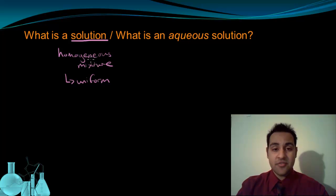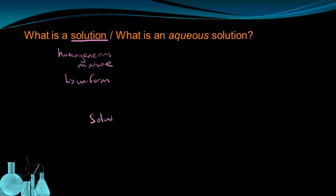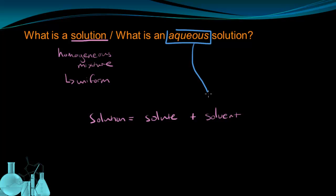So a solution could be a mixture of solids, liquids, gases. It doesn't matter as long as it's a uniform mixture. That's a solution. In the simplest case, a solution is simply made up of a solute and a solvent. The solute is what's being dissolved and the solvent is what's doing the dissolving. An aqueous solution is a solution where the solvent is simply water. Something that's dissolved in water.